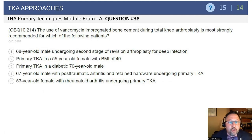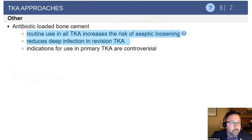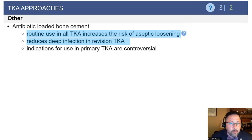Here's a question: the use of vancomycin-impregnated bone cement during total knee arthroplasty is most strongly recommended for which patient? The answer is the 68-year-old male undergoing a second-stage revision arthroplasty for deep infection. The use of antibiotics in bone cement remains controversial, particularly in primary TKA. Adding antibiotics to cement reduces its strength approximately 4% and can increase the risk of aseptic loosening. However, it has been shown to reduce the incidence of deep infection in revision arthroplasty and is therefore indicated in that setting.